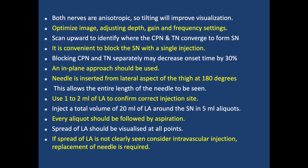Blocking the common peroneal and tibial nerve separately may decrease onset time by 30%. An in-plane approach should be used; alternatively, an out-of-plane technique can be used. The needle is inserted from the lateral aspect of the thigh at 180 degrees to the probe, which allows the entire length of the needle to be visible. Use 1-2 ml of local anesthetic to confirm the correct injection site. Inject a total volume of 20 ml of local anesthetic around the sciatic nerve in 5 ml aliquots, with aspiration after each aliquot. If the spread of local anesthetic is not clearly seen, consider intravascular injection and reposition the needle.